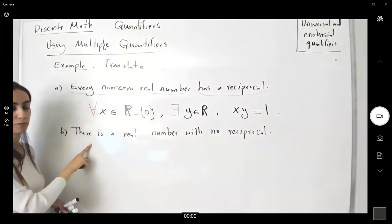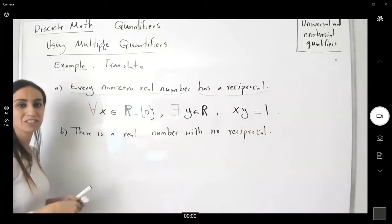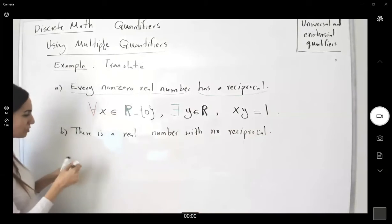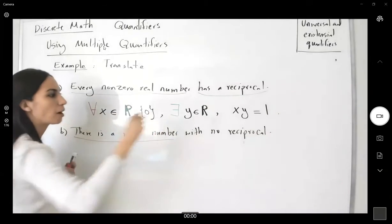How do you translate the second one? There is. So which comes first? Existential comes first. There is a real number.